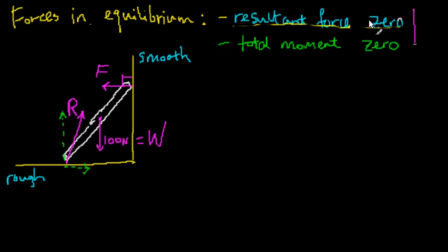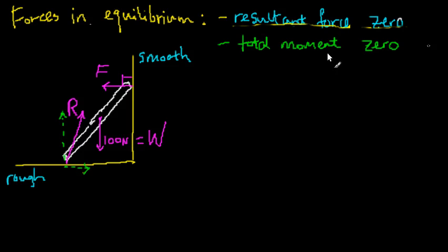The two conditions are: the resultant force must be zero, and the total moment must be zero. The resultant force equals zero is a bit easier to start with, because we've learned how to add vectors. In an earlier video, I explained that when you have three forces in equilibrium, the vectors must form a closed triangle.